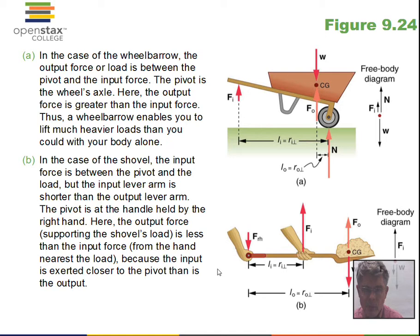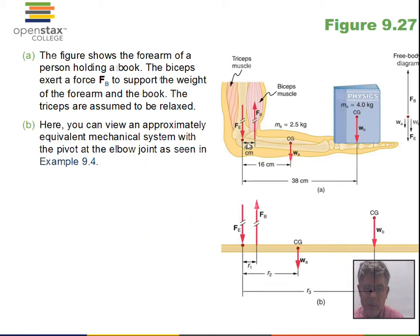Then we have a bicep muscle pulling up on the forearm. There's a certain lever arm distance for that. The forearm has a center of gravity and a weight mg would be a certain lever arm for that. And then if we're holding a thin physics book in the hand, there'll be an mg there and also a lever arm, and we would balance torques.